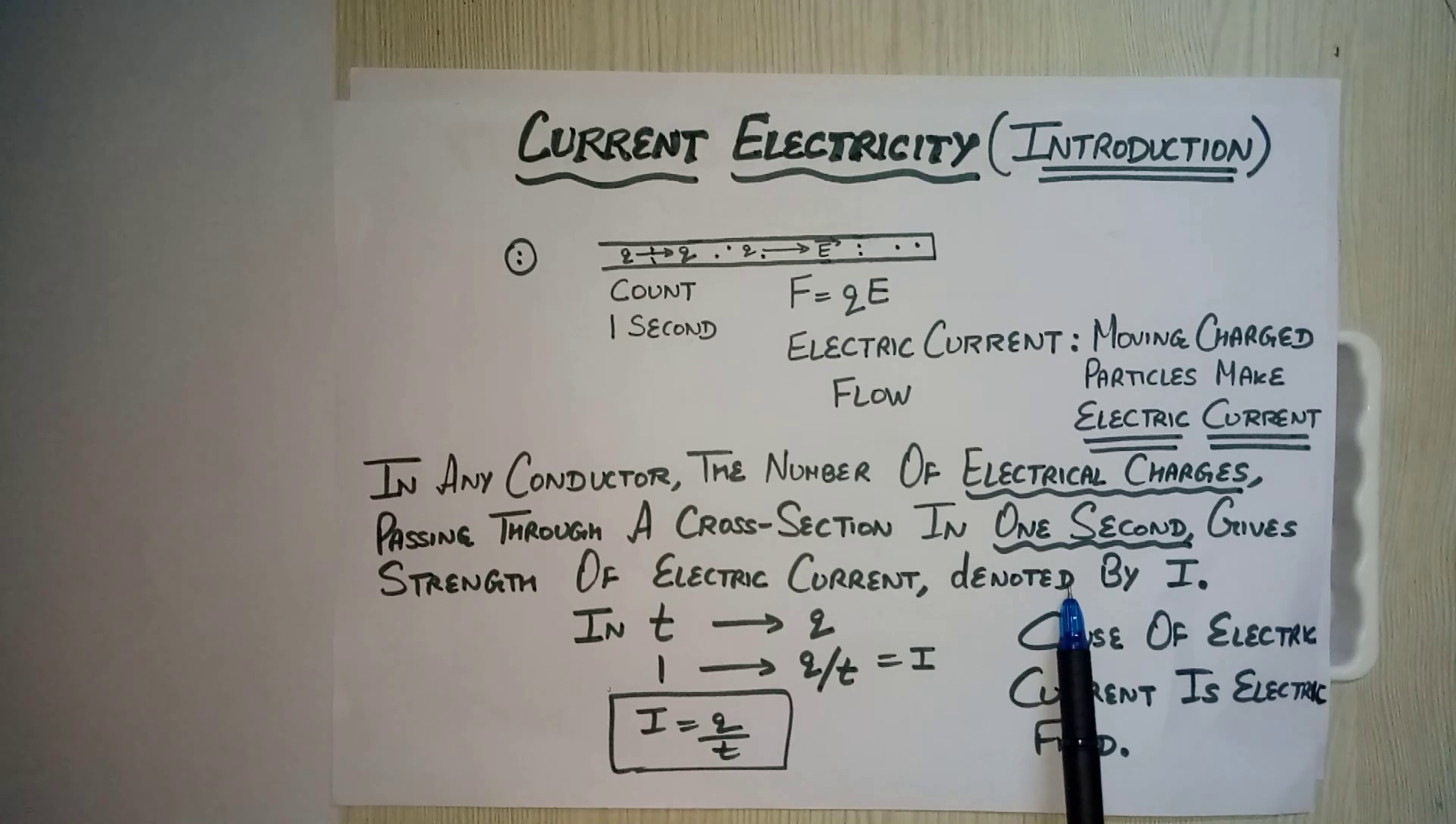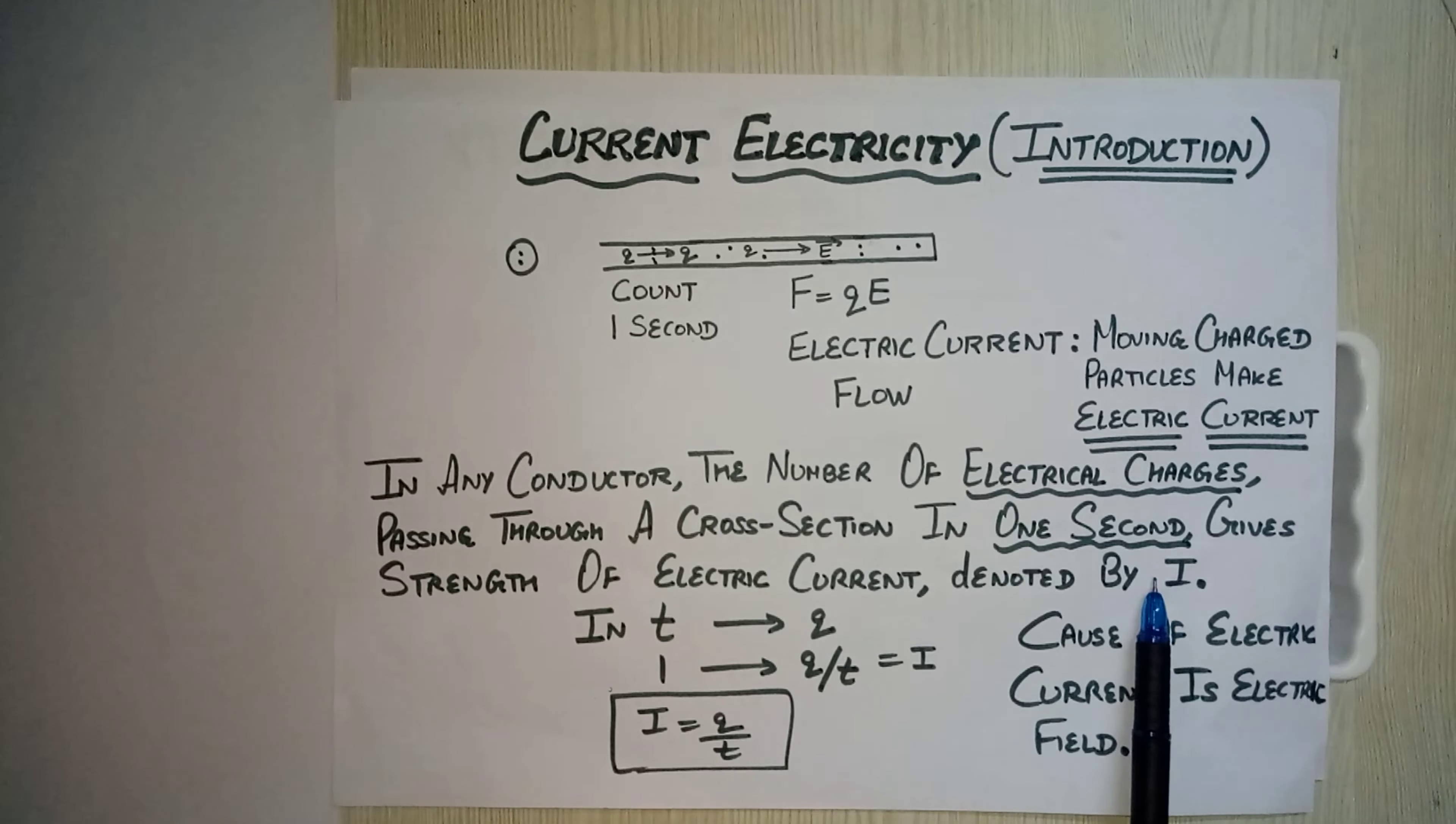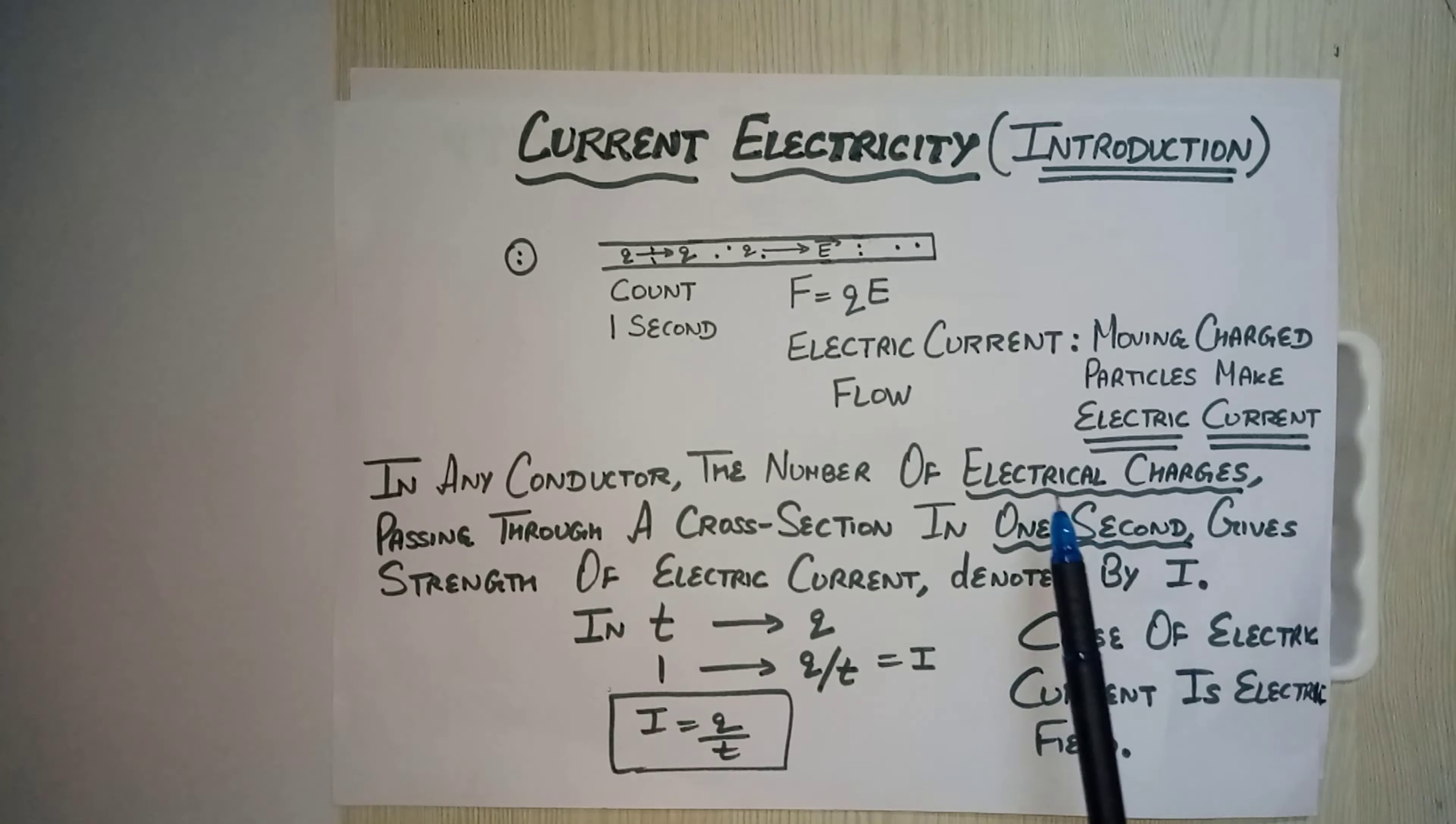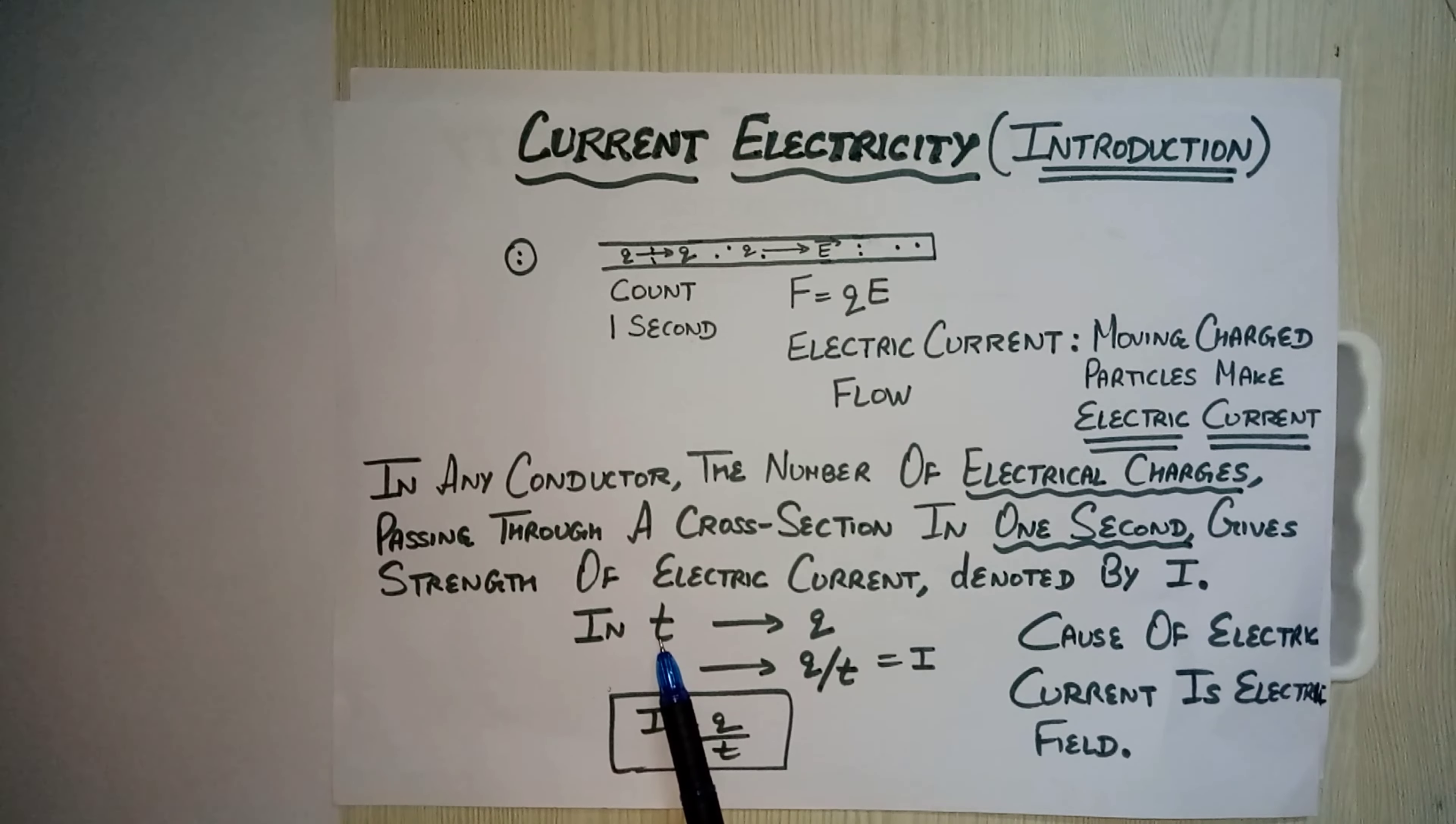Here important words are electrical charges and one second. Suppose in time t, the charge passing is small q, then in one second how much charge will flow? q by t. And this we will call current. So this is our first formula we get: electric current is equals to charge by time, where q is charge flown in time t.